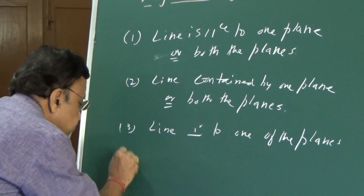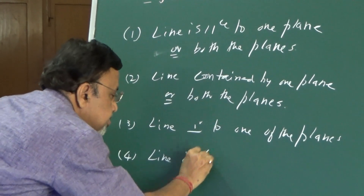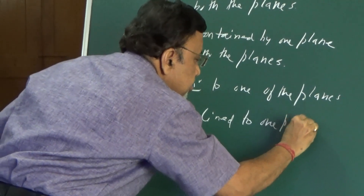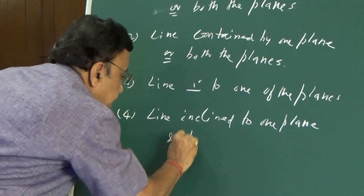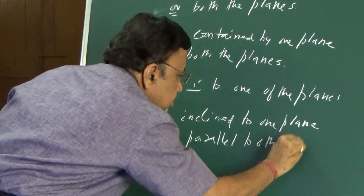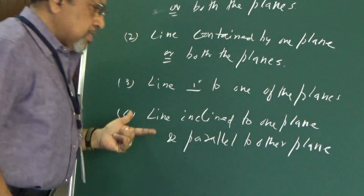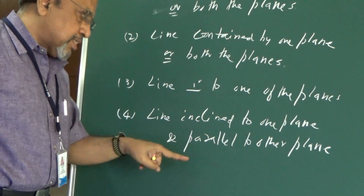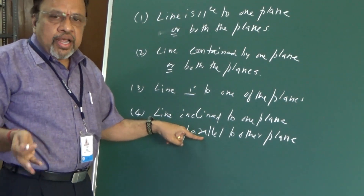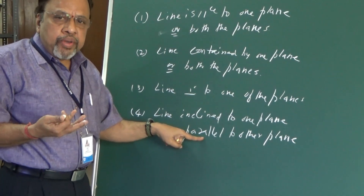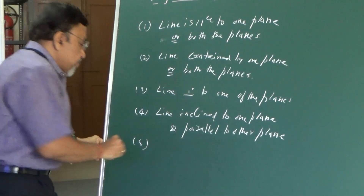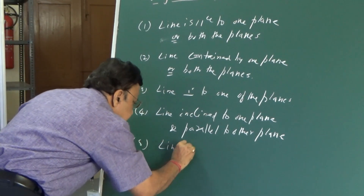The fifth case: the line is inclined to one plane and parallel to the other. This gives two sub-cases: the line is inclined to HP and parallel to VP, or the line is inclined to VP and parallel to HP.